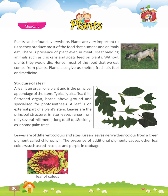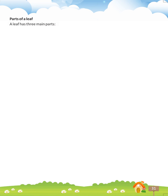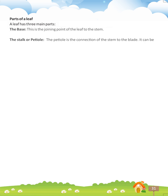Leaf of coleus. Leaf of cabbage. Parts of a leaf. A leaf has three main parts. The base — this is the joining point of the leaf to the stem. The stalk or petiole — the petiole is the connection of the stem to the blade. It can be short or long. It is generally cylindrical or semicircular in shape.